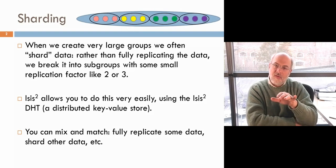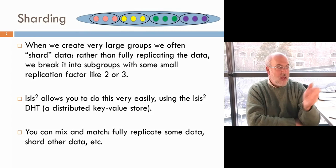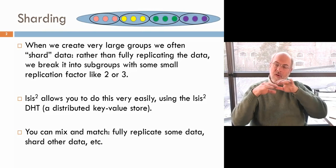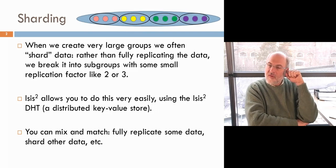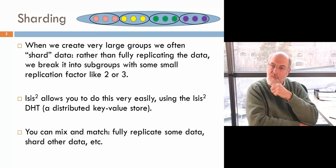This pattern of replication sounds a lot like what ISIS was built for. One complication with ISIS is that you're not supposed to be a member of hundreds of groups. So in ISIS we created a way to take a single group and turn it into a collection of shards, so that with one group you can host as many shards as you like as subgroups within it. We also modified the ISIS primitives so they understand how to talk to groups sharded in this way using key-value data.